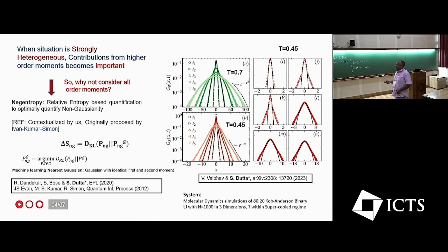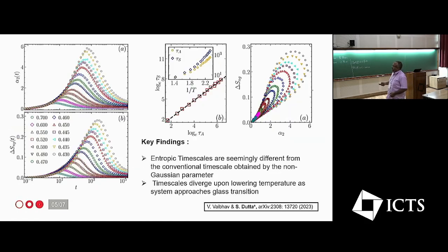So using this measure, now we ask how different these two results are. Initially we computed this via this alpha_2, which had the contributions till fourth order.